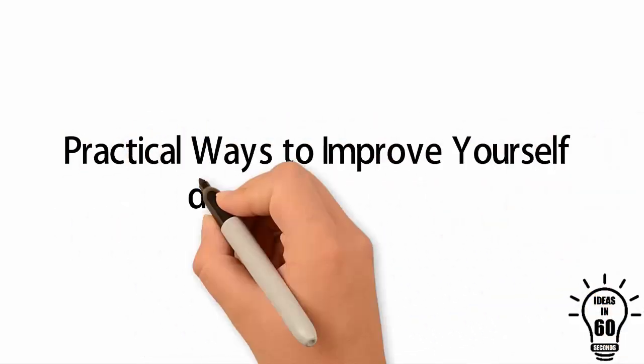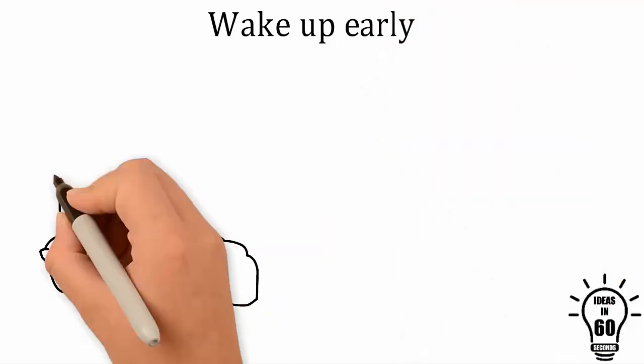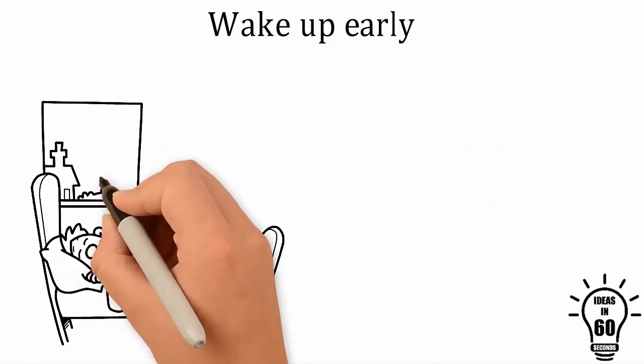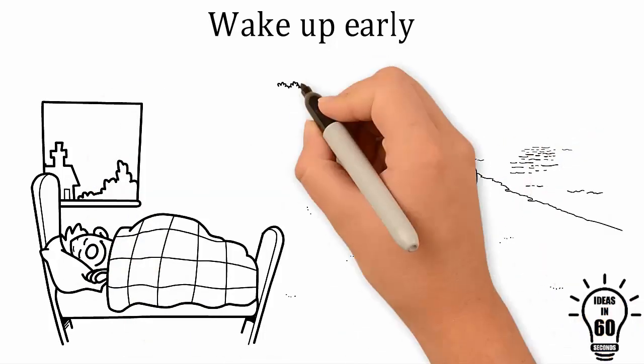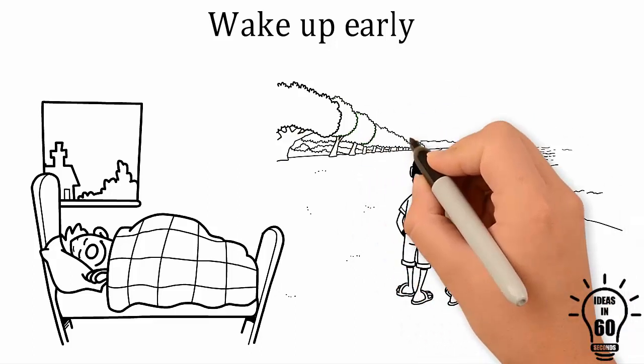Practical ways to improve yourself during lockdown. Wake up early, say 5 to 6 a.m., to improve your productivity and quality of life. When you wake up early, your mindset is already set to continue the momentum and proactively live out the day.